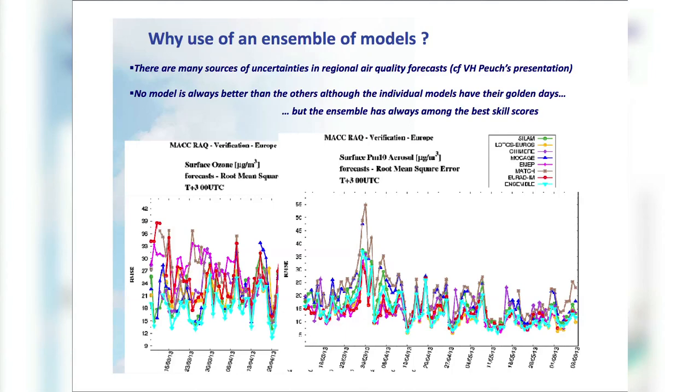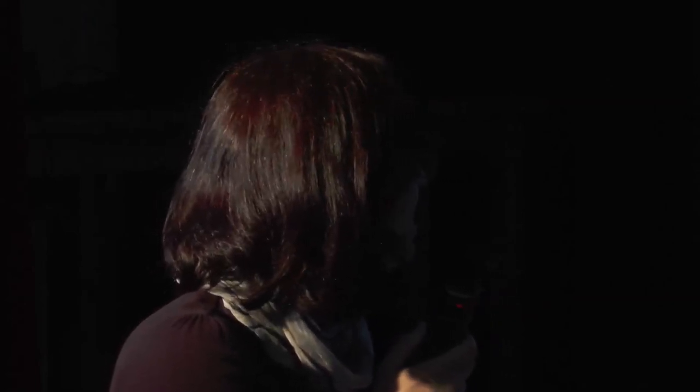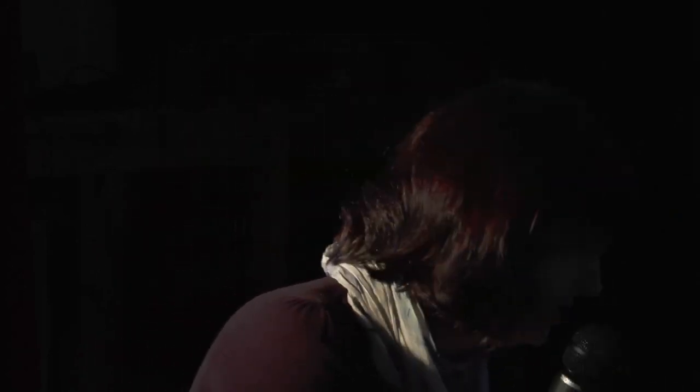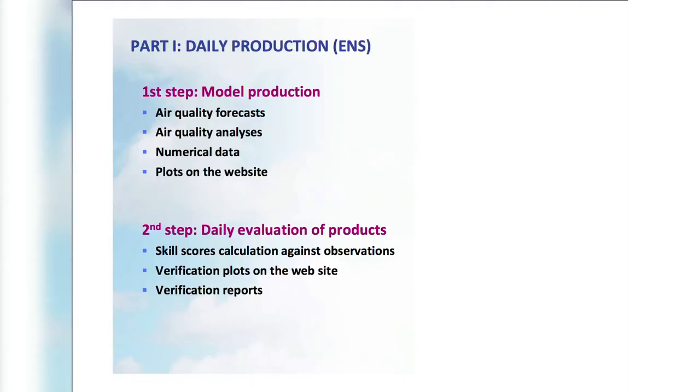The ensemble proves to be among the best scorers on long time series. Here is an illustration of the root mean square error compared to surface observations for ozone, over a period of three months. The different models have different colors, and the light blue corresponds to the ensemble — you can see that its root mean square is usually the lowest. Another example for particulate matter below 10 microns shows the ensemble behaving very well on average.